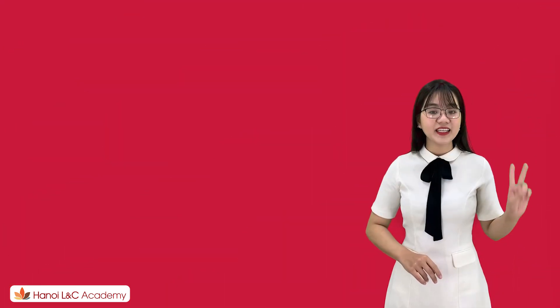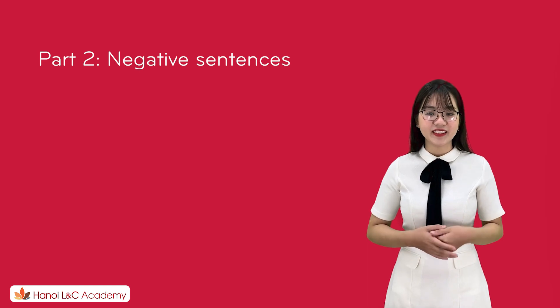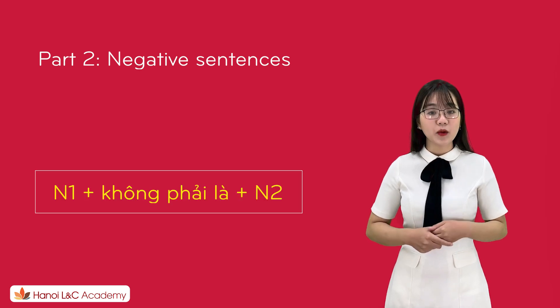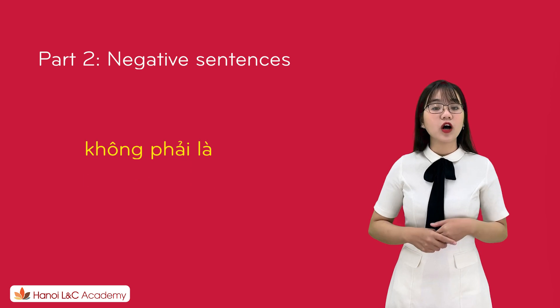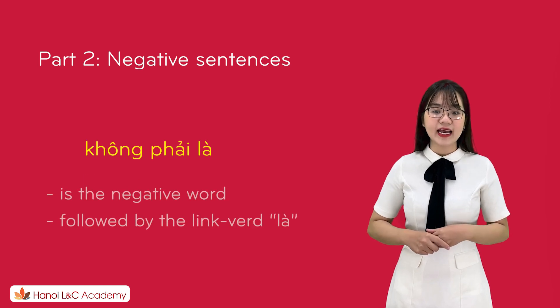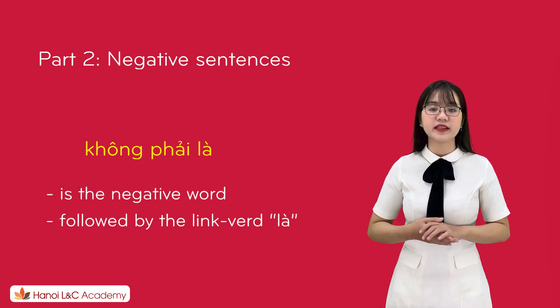Part 2: negative sentence. The structure is: Noun 1 + không phải là + Noun 2. 'Không phải là' is a negative word following the linking verb 'là'.